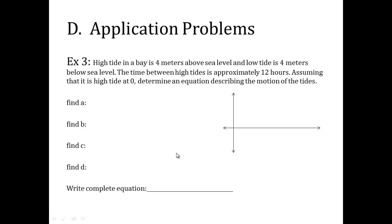So application problems. Yes, there were problems, and they're going to generate a picture for you. And from that picture, you're going to find the equation. So we will work on this quite a bit in class. So just try it with me. High tide in the bay is four meters above sea level. Low tide is four meters below sea level. The time between the high tides is approximately 12 hours. Assuming that it is high tide at time zero. So this is my time. At time zero, it's high tide. And we said that's four.